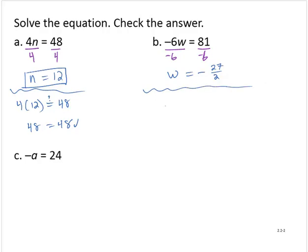Let's check our work. Is negative 6 times negative 27 over 2 equal to 81? Well, a negative times a negative is positive, and we can reduce between the 6 and the 2, leaving a factor of 3. And 3 times 27 is 81. So 81 equals 81. That checks out. So w equals negative 27 halves.